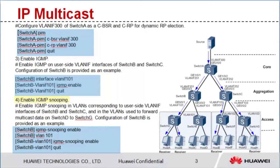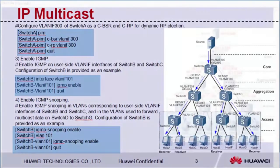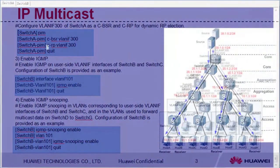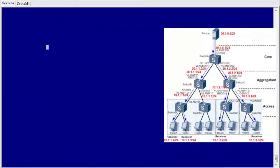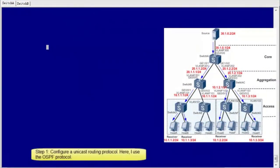The configuration on Switch B is provided as an example. Let me show you the detailed configuration procedure and commands. Step 1: configure a unicast routing protocol. Here I use the OSPF protocol. I'm not going to show you the specific configuration procedure because it is a commonly used routing protocol.